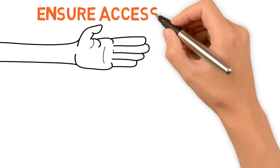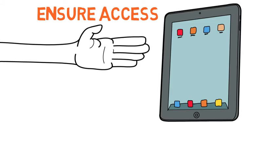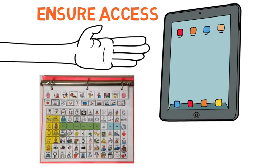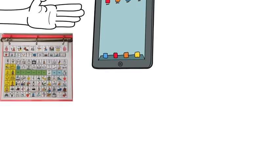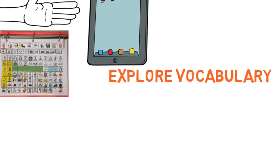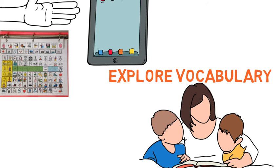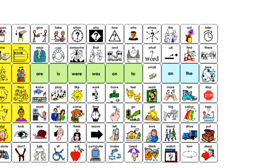You cannot model a communication system if it is not out and available. Ensure that the AAC system is always accessible and within reach. That way, you can model and use it anytime, anywhere. If the child is using a high-tech AAC system, you may also want to print out hard copies of the main page, or have additional light-tech or backup systems for activities and environments that are not suitable for electronics. Take time to explore the tool together. Talk about the words and where the vocabulary is found. Locate vocabulary or messages you think you could model frequently so you can find vocabulary easily when you need it.